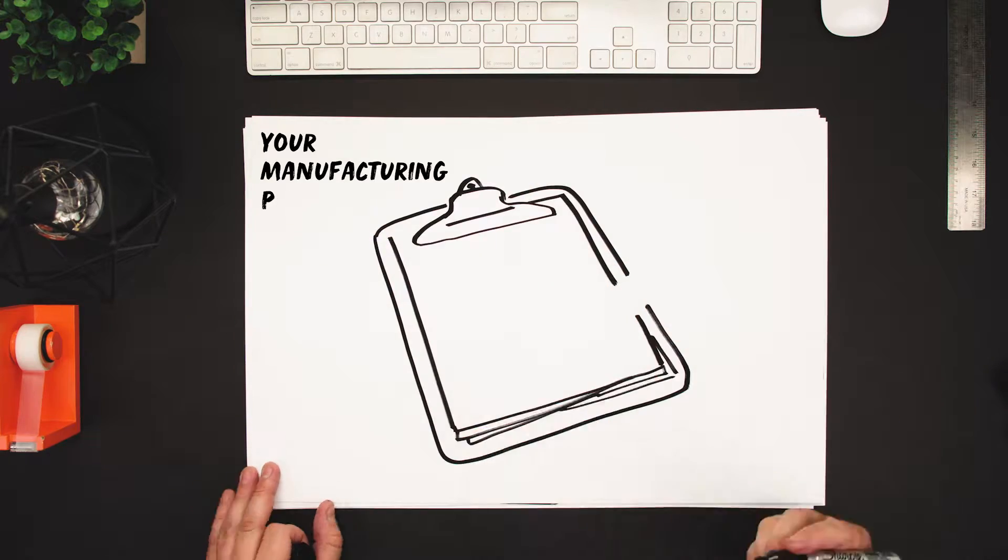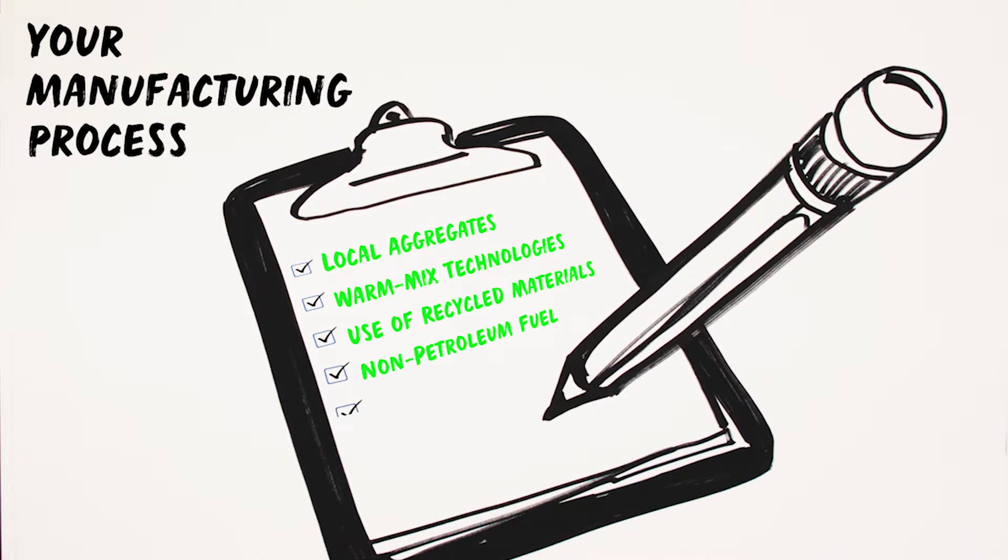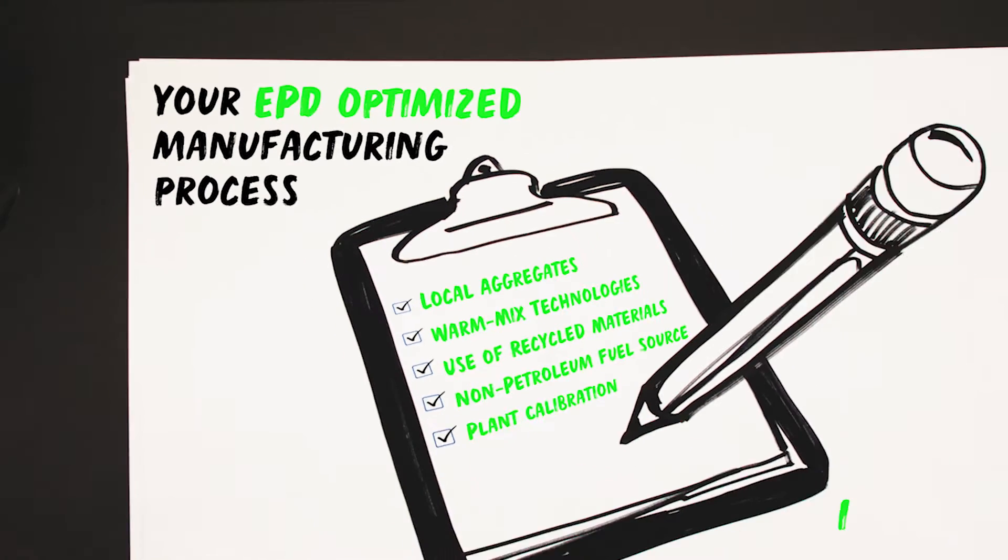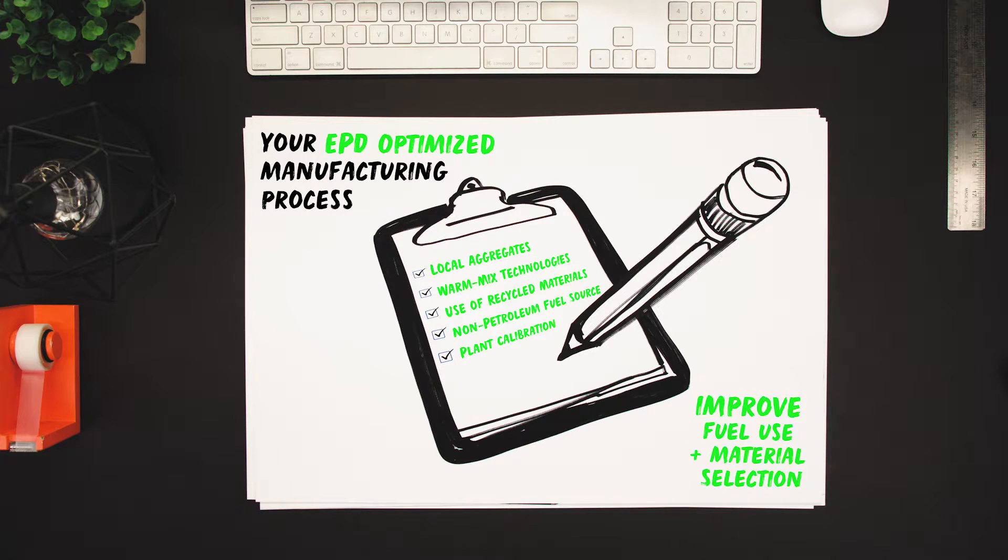Beyond the credits, EPDs can also help a company identify areas for optimization within their manufacturing processes, particularly inefficiencies in fuel use and material selection.